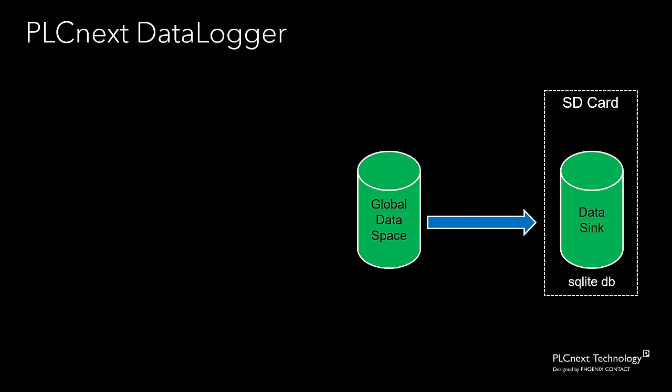The period that we sample the data from the global data space is called the sampling interval. In a typical application, the sampling interval will be of the order of milliseconds, maybe tens of milliseconds or hundreds of milliseconds. The problem with this is that it's inadvisable to write to an SD card with that kind of frequency because it affects the lifetime of the SD card.